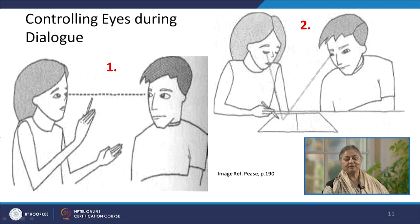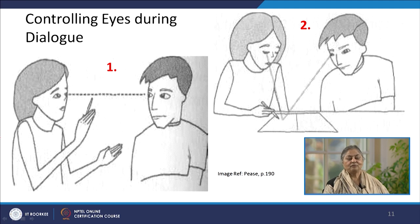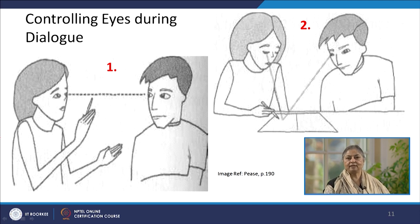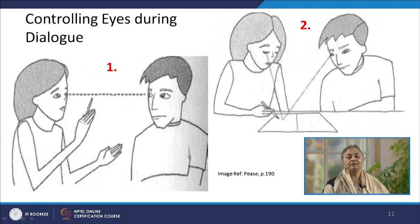This particular image, taken from Allan Pease, illustrates it very significantly. In the first image, the speaker is trying to ensure that the gaze is shifted towards the tip of the pen, and then in the second image, the person has gradually brought the pen to the point in the book or notebook where the person has to concentrate. So, controlling eyes during the dialogue also controls the thought patterns of the other person.